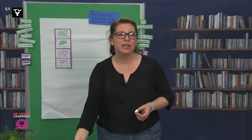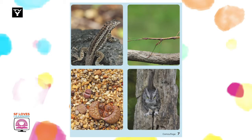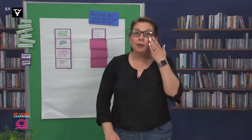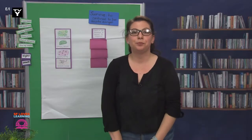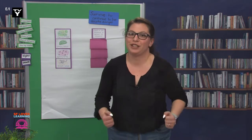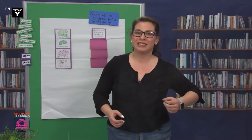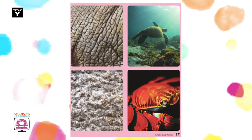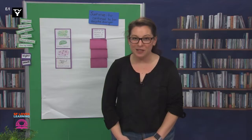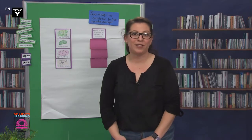Camouflage is when a living thing is hard to see because its color matches its surroundings. We're going to show a picture on the screen of different animals and plants using camouflage — can you see them? That was a bit challenging. The next defense, shells or armor, are really hard, which makes it difficult to bite through. Let's check out some images and see if you recognize any of the living things that have shells or armor. Did you see the crab? I don't think any shrimp would survive against that.